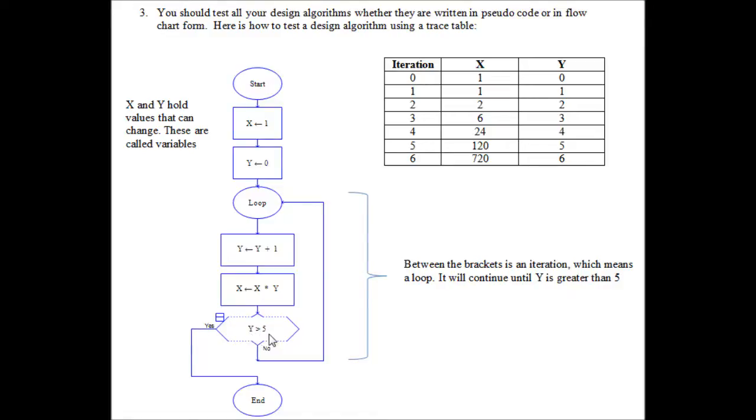We drop down now to the decision diamond which asks if Y is greater than 5. In this case, Y is set to 1 on iteration 1, so no. So it goes back round the loop and we're now into iteration 2.